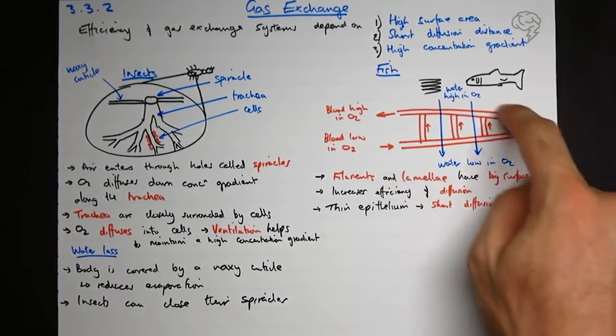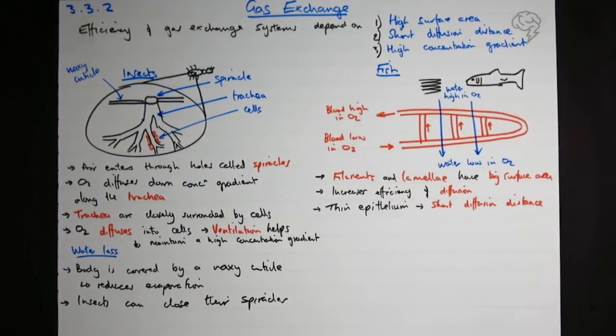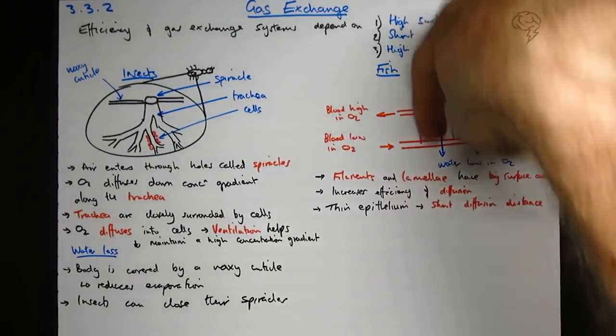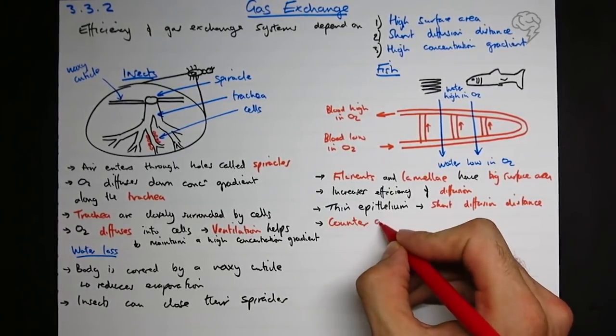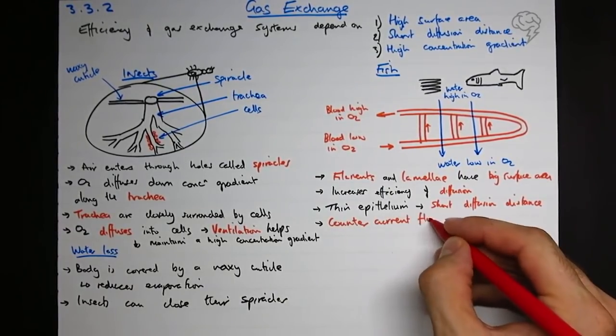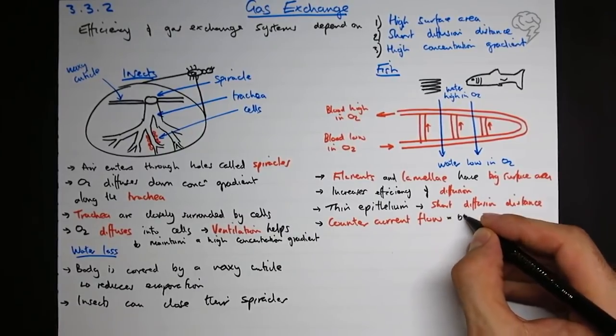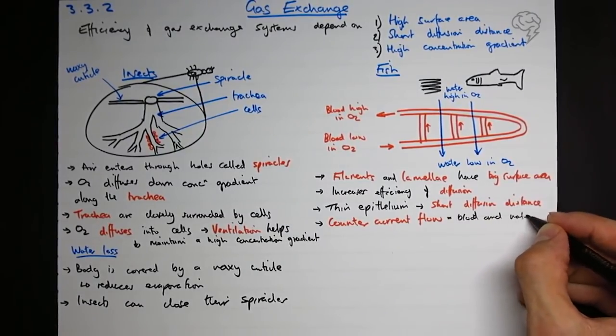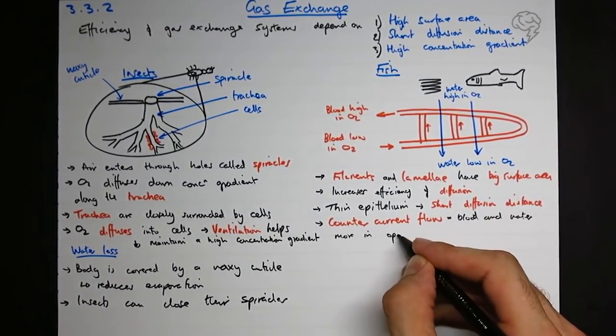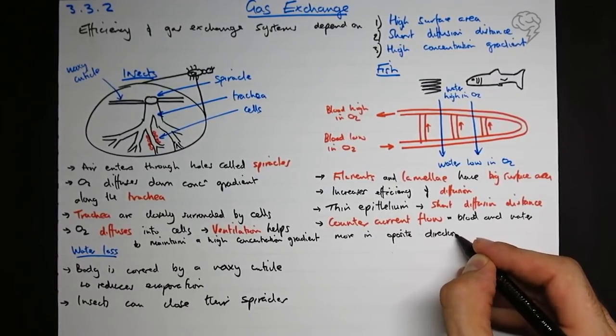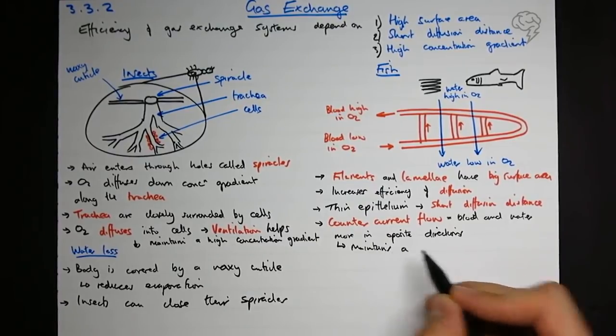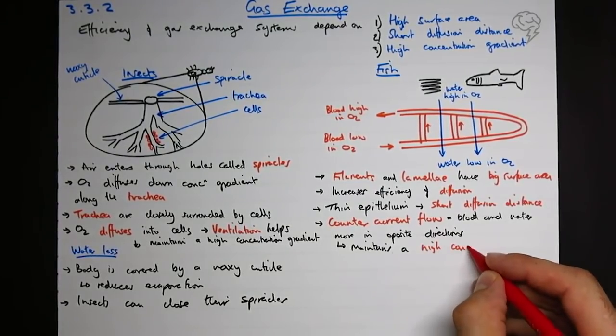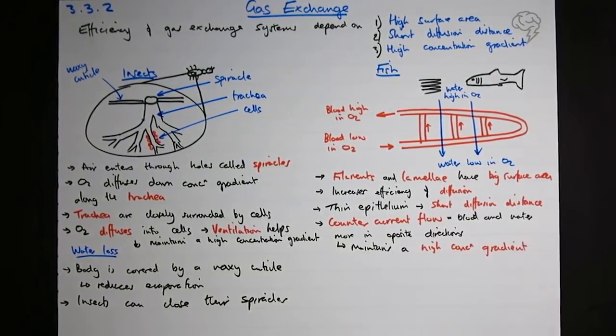The most important thing is that the blood and the water go in opposite directions. Blood going this way, water going this way. This is called a counter-current flow. Counter for opposite, current for direction. What does this do? Well, this maintains a high concentration gradient. How does it maintain a high concentration gradient?